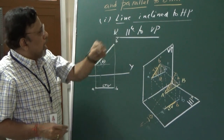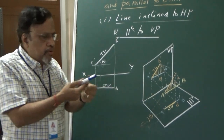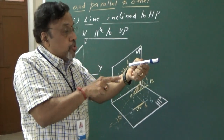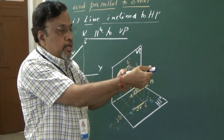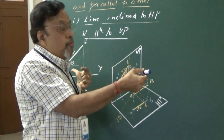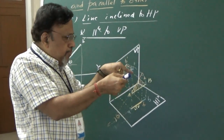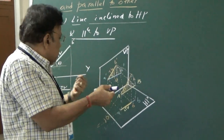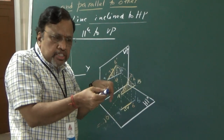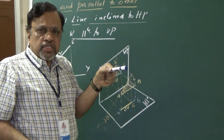Now I will consider Case 2: a line inclined to VP and parallel to HP. The line is initially parallel to both HP and VP. I want it still parallel to HP but inclined to VP. So I rotate it in this direction. Once I rotate the line this way, it becomes inclined to VP but still parallel to HP. In the top view, you will get the true length, and the angle will be the angle made with VP. We use theta for the angle with HP, so now we use phi — phi is the inclination of the line with reference to VP.